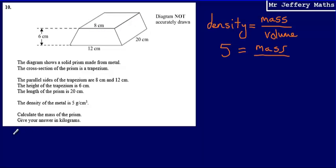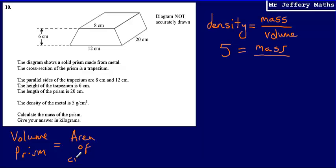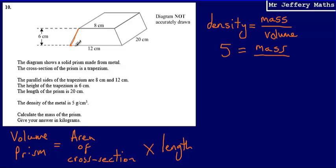To work out the volume of a prism, we use the formula: volume of a prism equals the area of the cross-section multiplied by the length. So we're going to need to work out the area of the trapezium, and then multiply it by the length, which is 20.